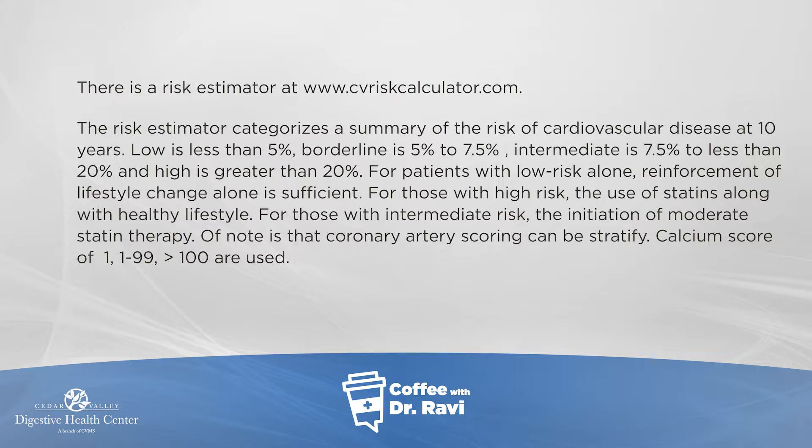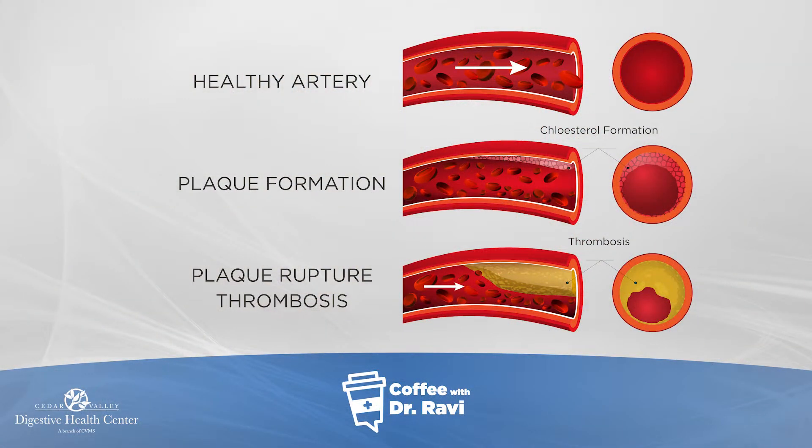The second tool we use is calcium scoring — trying to figure out if there are little deposits of calcium in that plaque, which can be picked up by a CT scan. Calcium scoring can give us a sense of one's risk, and that's what cardiologists sometimes use. A calcium score of zero suggests low risk; greater than 100 may indicate higher risk; and between 1 and 99 is somewhere in the middle.